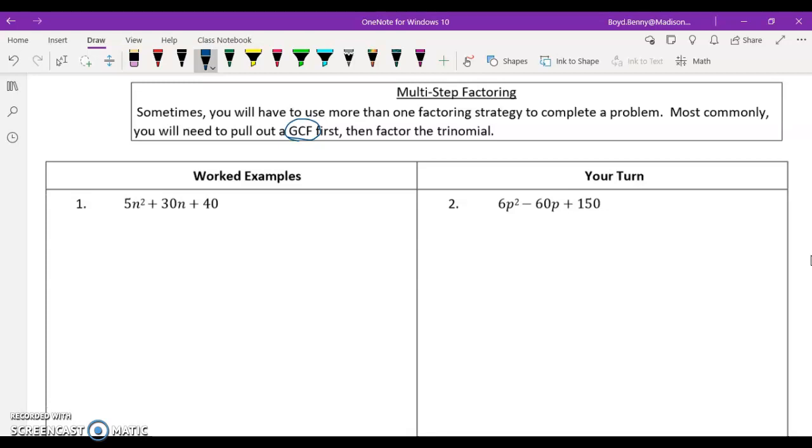So let's take a look at a few examples here. When I look at this trinomial, I notice that all of them share a factor of five, so I want to factor out that GCF first. That's going to leave me with n squared plus 6n plus 8 in the parentheses. Let's draw our box.